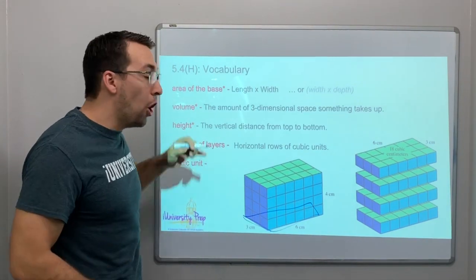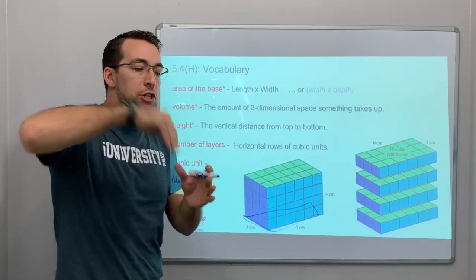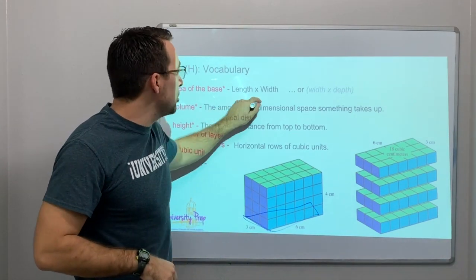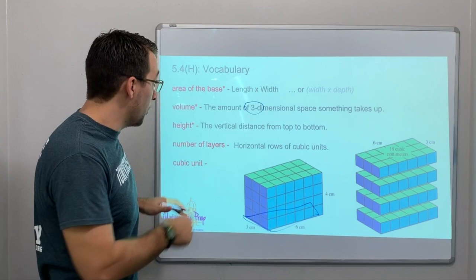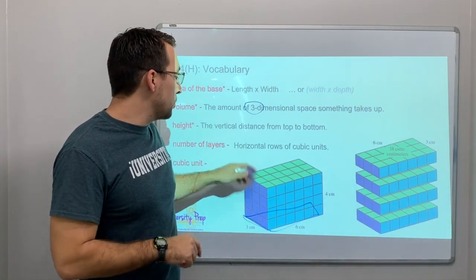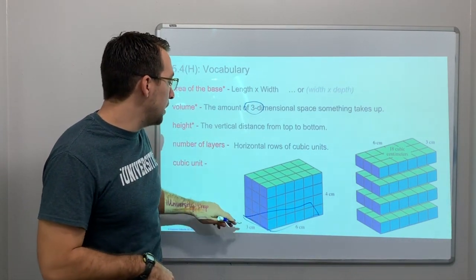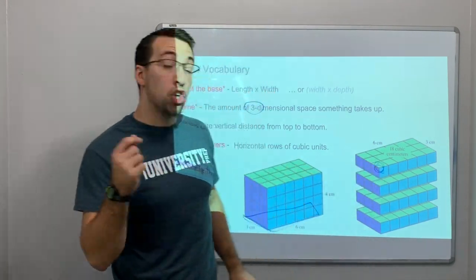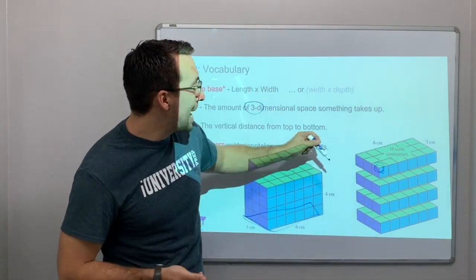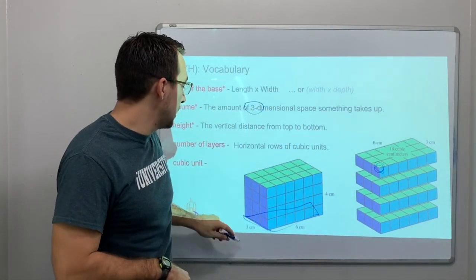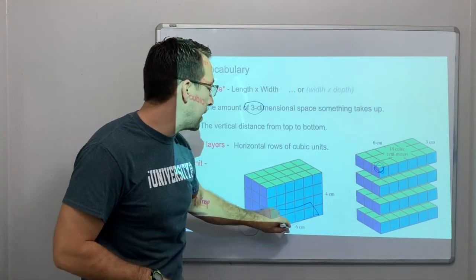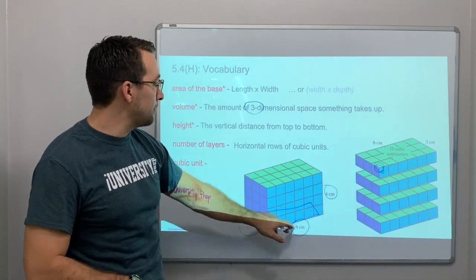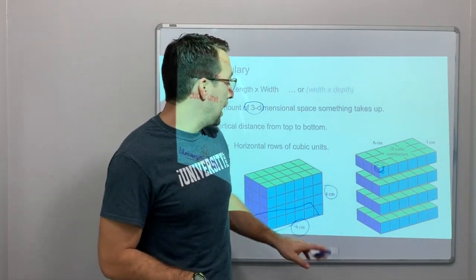Volume talks about how much stuff can you put inside of an object. Volume is for three-dimensional objects - length times width times height. Volume is, if each of these cubes is a cubic unit, then how many could you fit inside of this?